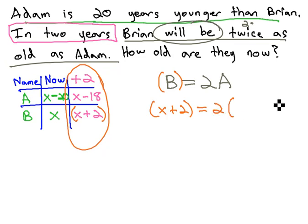Equals twice Adam. Adam in the future is x minus 18. We now have an equation we can solve for x.